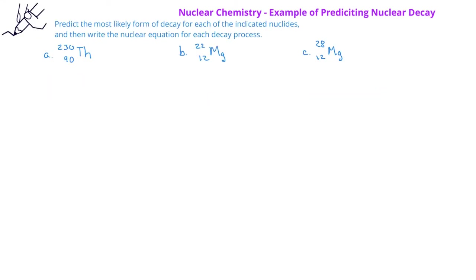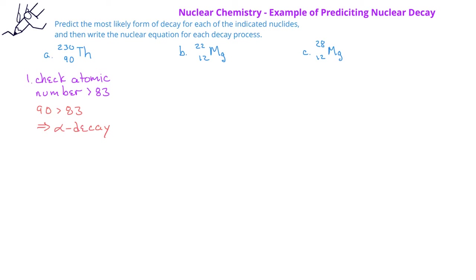In this problem, we're asked to predict the type of nuclear decay for each of the following nuclides and to write the nuclear equation representing this decay. In the first case, we're given thorium-230. Since thorium has an atomic number of 90, which is greater than 83, we would predict that thorium-230 would undergo alpha decay. The nuclear equation for the alpha decay of thorium-230 would show thorium-230 (atomic number 90) on the reactant side, and on the product side, an alpha particle and the daughter nuclide with mass number 226 and atomic number 88, which is the element radium.